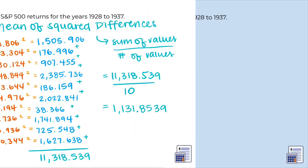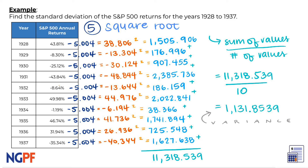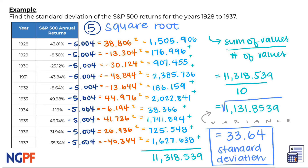This is the last and final step to find standard deviation. The value that we currently have is actually called the variance of the data, but that's for another video lesson. In order to find the standard deviation, we can take the square root of this variance, the value from step 4. The square root of 1131.8539 is equal to 33.6430364. So our final answer for the standard deviation of the returns of stocks for these 10 years is about 33.64%.